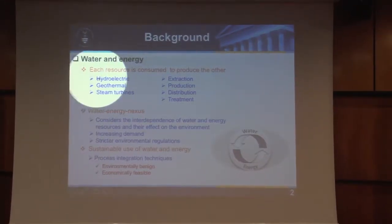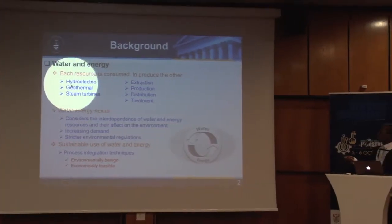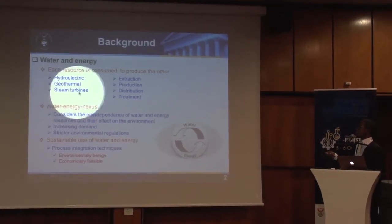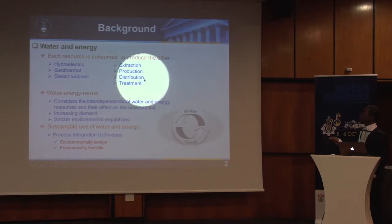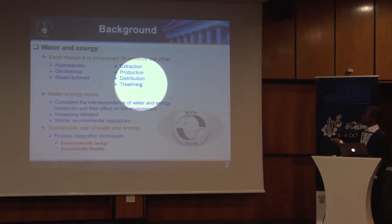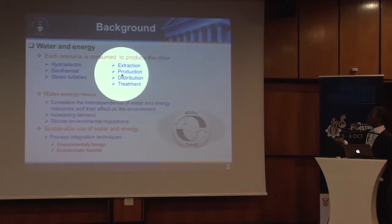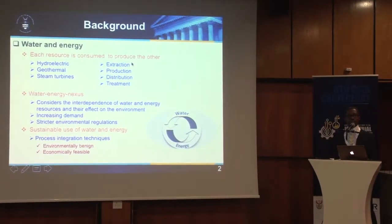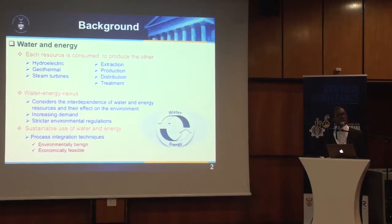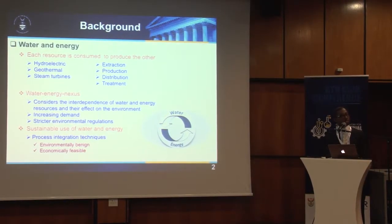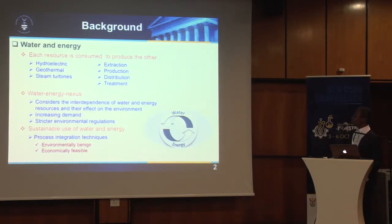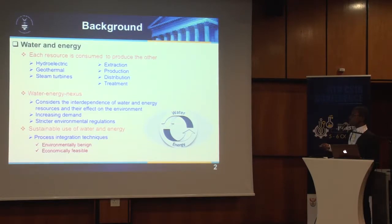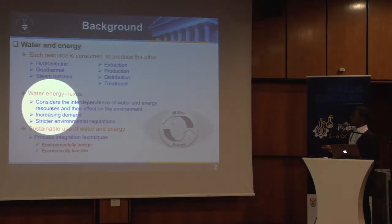Here I'm giving examples of why we say there is a nexus. For example, if you talk about a steam turbine, you need to generate steam — which comes from water — to run a turbine. Distribution of water needs pumps, which use energy. Treatment of water uses a lot of energy. Production of energy, for example at Eskom, which generates power — one of the major users of water in South Africa is actually power generation. And that's the thing you tend not to look into. We use process integration techniques to solve this problem.